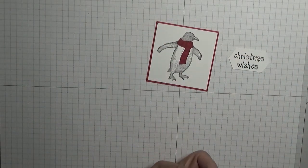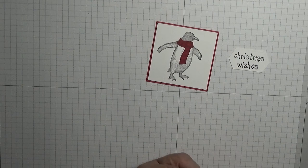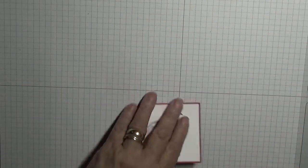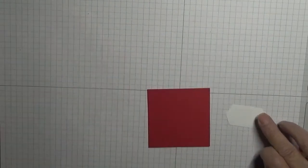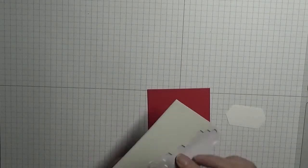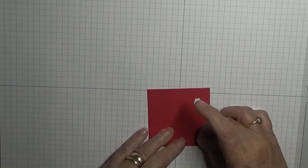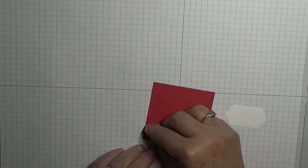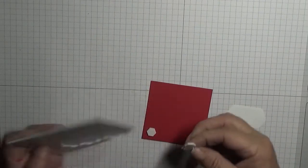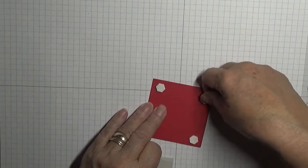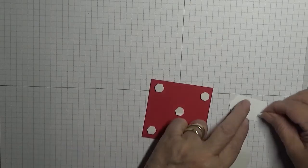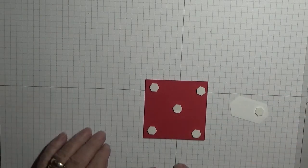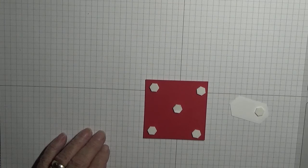And then we'll put dimensionals on the back of both of these. Well, this one I just want it on this side. And this one on the back. And one this side. Right. That's that down.